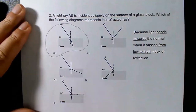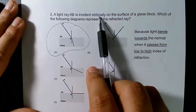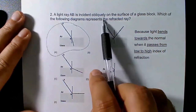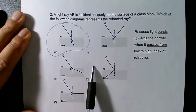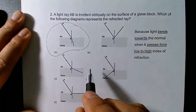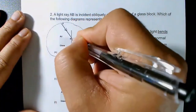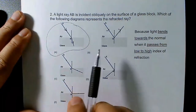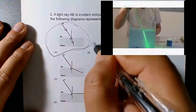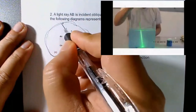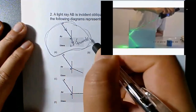Now a couple of conceptual questions. A ray of light AB is incident obliquely on the surface of a glass block. Which diagram represents the refracted ray? The ray is going from air to glass. When going from lower to higher index of refraction, it bends towards the normal — that's from Snell's law.